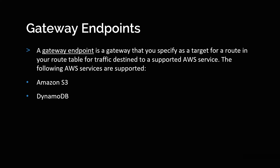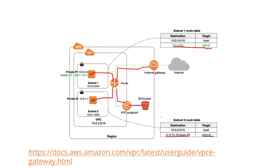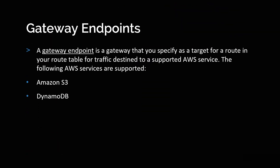A gateway endpoint is a gateway specified as a target for a route in your route table for traffic destined to a supported AWS service — S3 and DynamoDB. Wherever you want to route the request, the prefix ID of Amazon S3 will be the destination and the target will be the VPC endpoint ID. The prefix of a VPC endpoint ID always starts with 'vpce-' followed by the ID. Whenever your EC2 instance wants to communicate with the Amazon S3 bucket, the router checks the route table, sees the target is via VPC endpoint, and all network traffic is routed through it to the S3 bucket. So far we've seen only one form of endpoints: gateway endpoints.